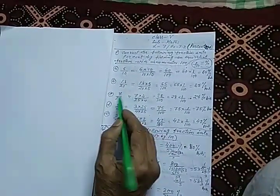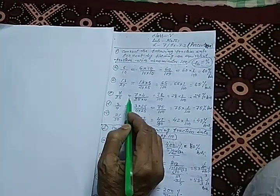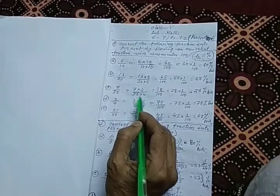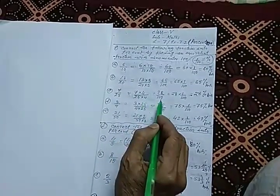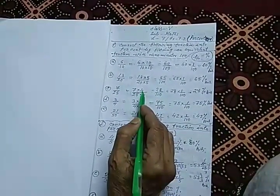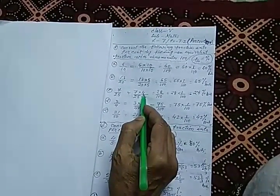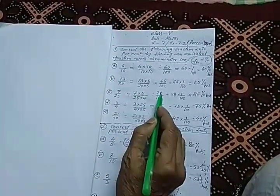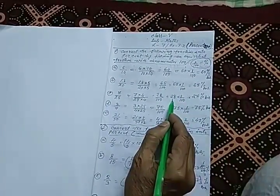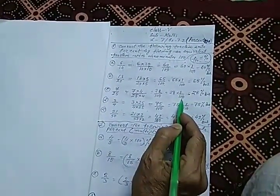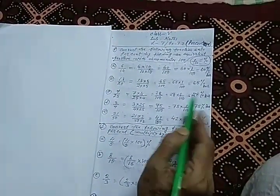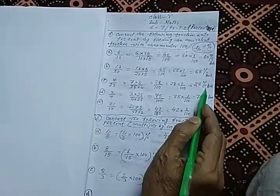The third fractional number is 7 by 25. We must multiply 4 with the denominator — 25 times 4 equals 100. We also multiply 4 with the numerator: 7 times 4 is 28. So we get 28 by 100, and writing 28 multiplied by 1 by 100, we can replace 1 by 100 with the percent sign, giving 28 percent.